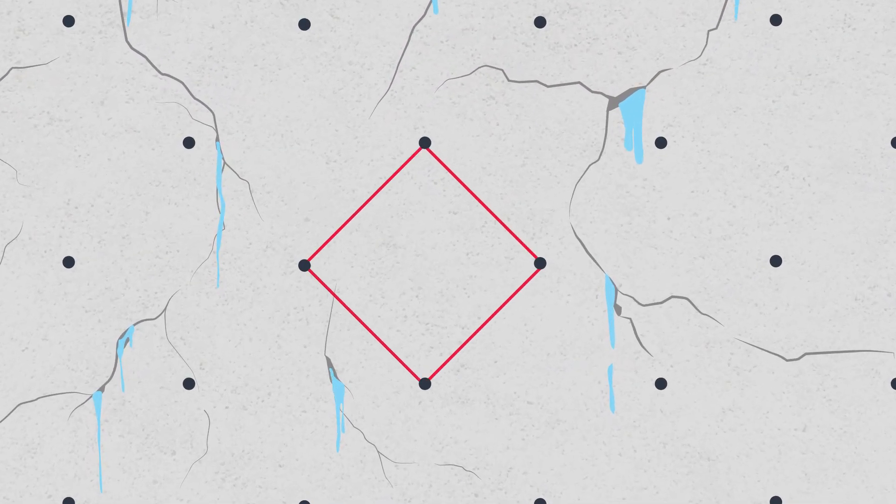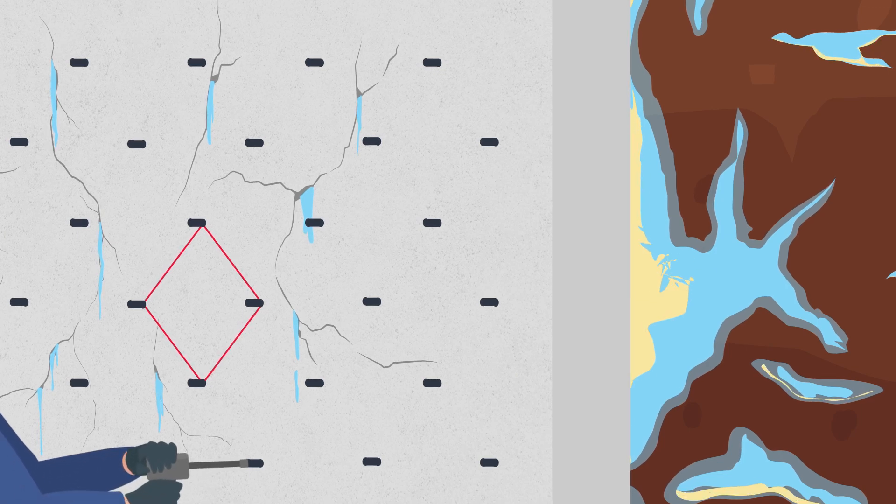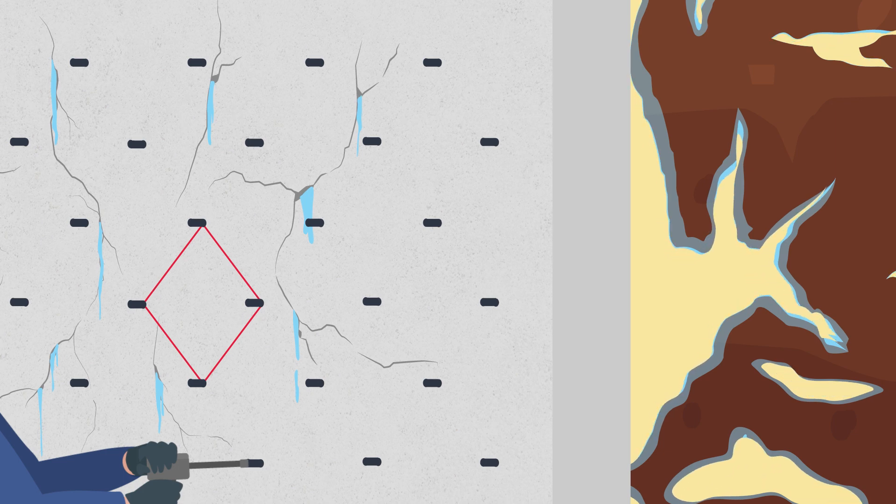In this process, holes are drilled through a structure in a diamond pattern. Next, Alchatek injection resins are injected through the structure into the soil and/or voids, sealing the leak from the outside of the structure.